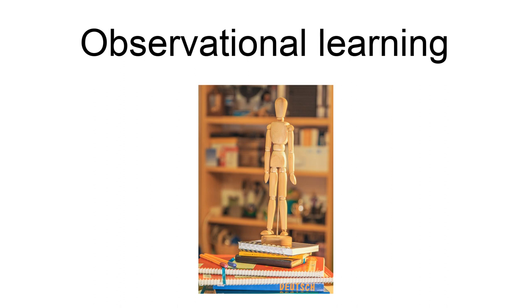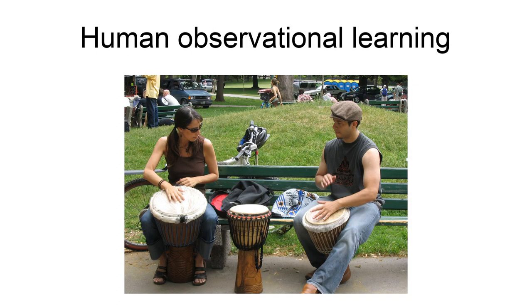Many behaviors that a learner observes, remembers, and imitates are actions that models display through modeling, even though the model may not intentionally try to instill a particular behavior. A child may learn to swear, smack, smoke, and deem other inappropriate behavior acceptable through poor modeling.